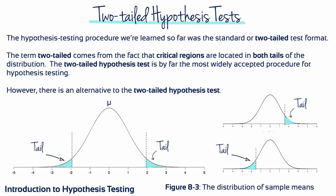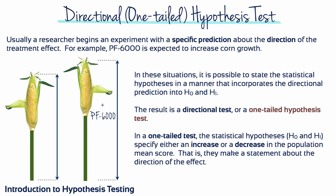The hypothesis testing procedure we've learned so far is the standard, or two-tailed, test format. The term two-tailed comes from the fact that critical regions are located in both tails of the distribution, and it's by far the most widely accepted procedure. However, there is an alternative. Usually a researcher begins an experiment with a specific prediction about the direction of the treatment effect — for example, Plant Food 6000 is expected to increase corn growth. In these situations, it's possible to state the statistical hypotheses in a manner that incorporates the directional prediction. The result is a directional test, or a one-tailed hypothesis test, where the hypotheses specify either an increase or a decrease in the population mean score.